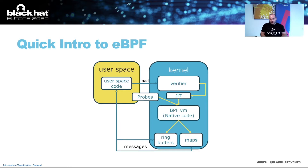An eBPF program can be written in user space just as a regular C program, but has some restrictions. For example, to read the value of a pointer to memory, it is necessary to use a special BPF helper function. After loading a BPF program into the kernel, it can be attached to an event such as kprobe, uprobe, or tracepoint. When the event happens, it triggers the BPF program, which can interact with user space using a ring buffer and maps.